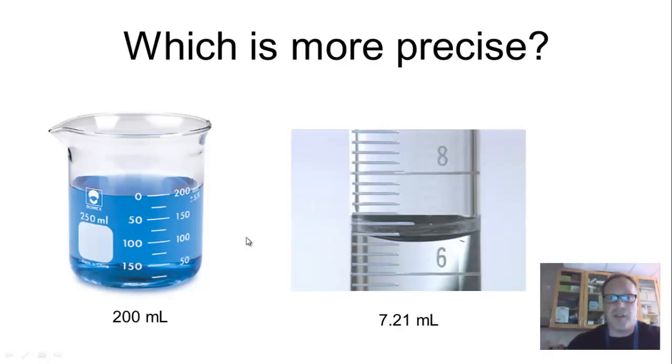Well, what you should have answered here is this one. This 7.21 is more precise. And the easy way to tell that is that there's more numbers past the decimal point. This is a very precise measurement, whereas this is not a very precise measurement.